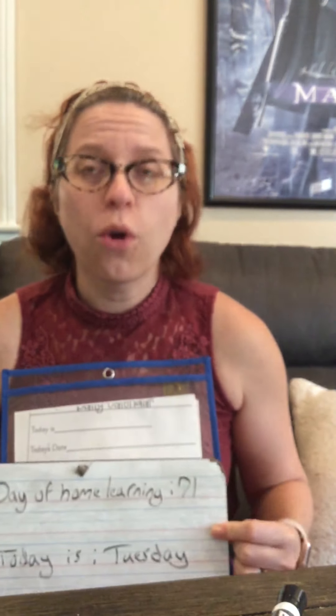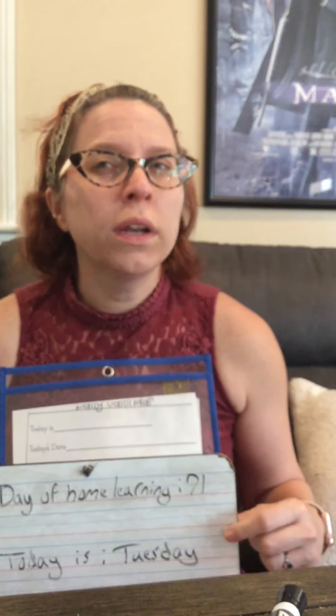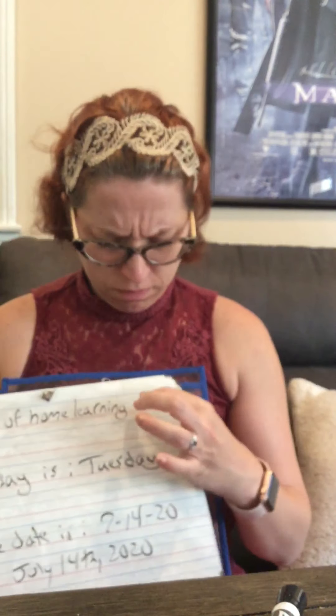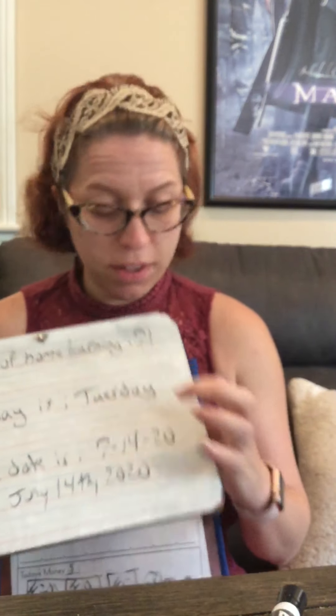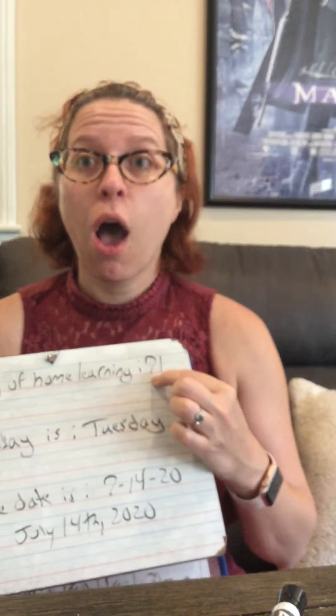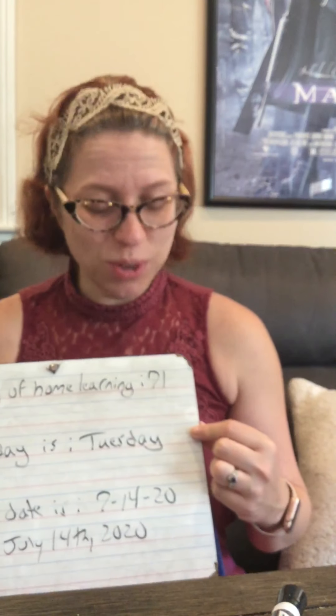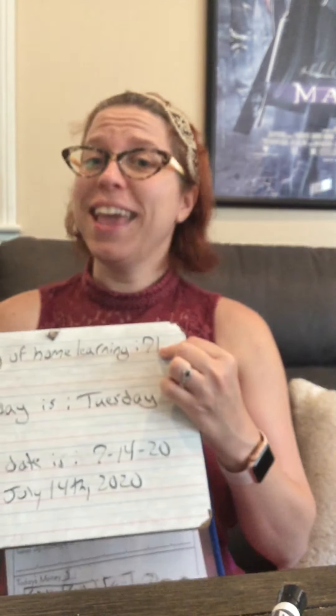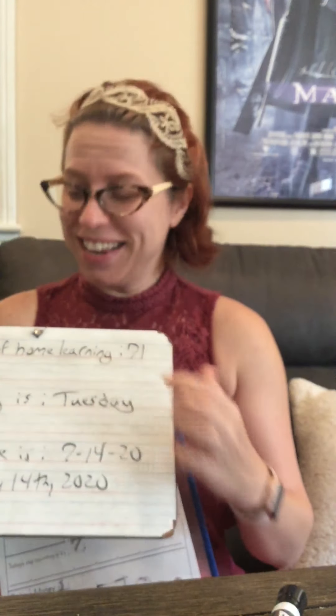So what is in the hundreds place? Nothing. What is in the tens place? Seven. And what is in the ones place? One. Today we're going to skip count by seven, so we're actually going to borrow our multiplication chart once again.